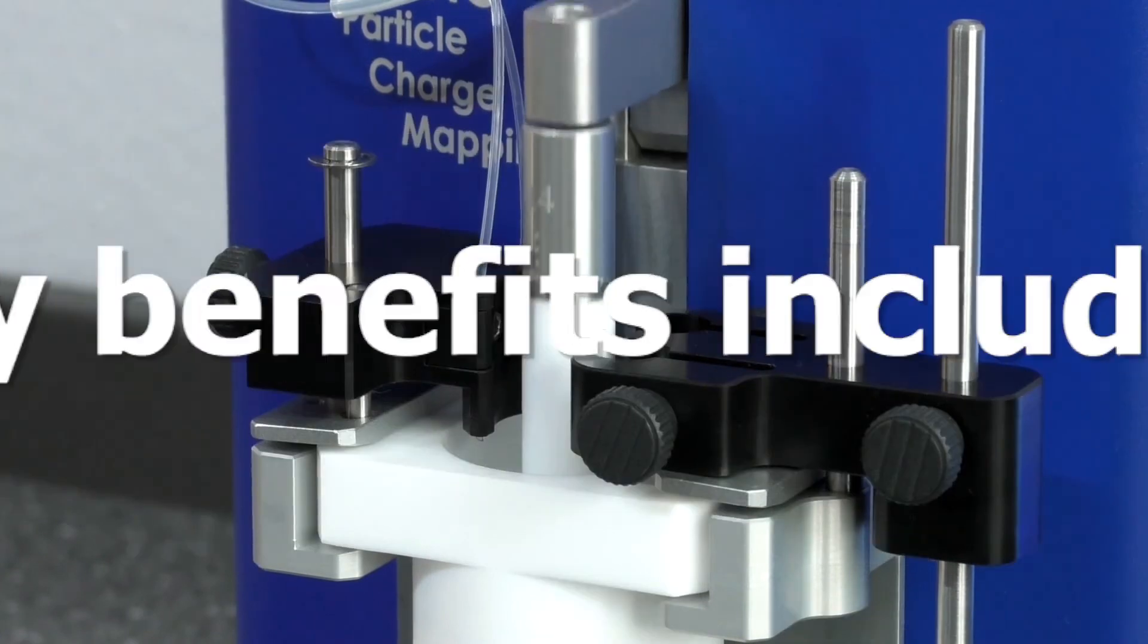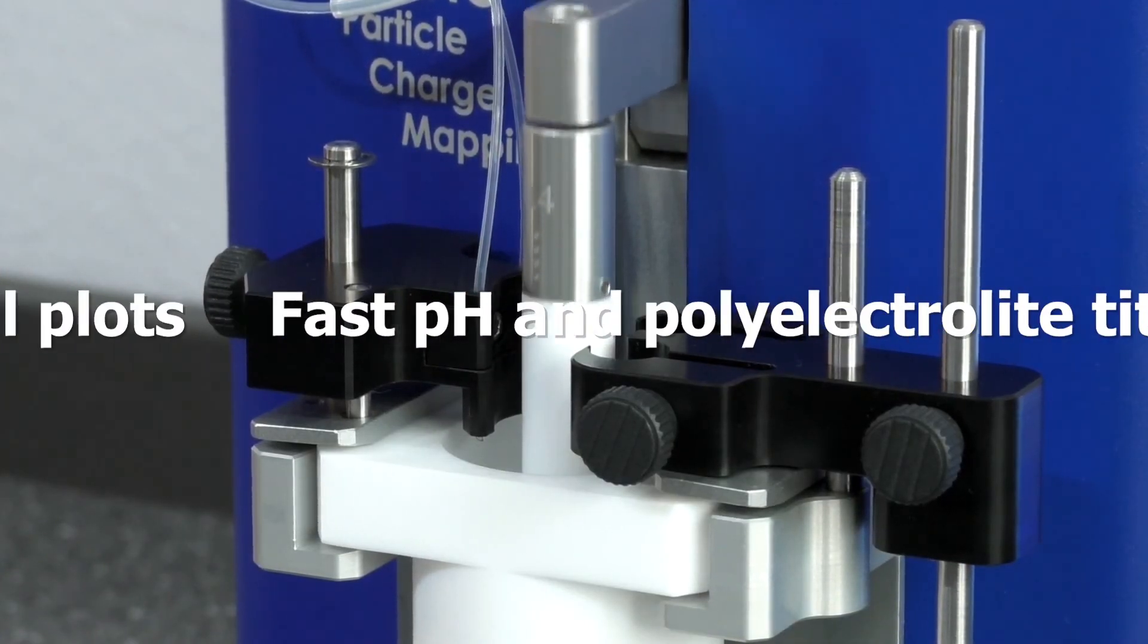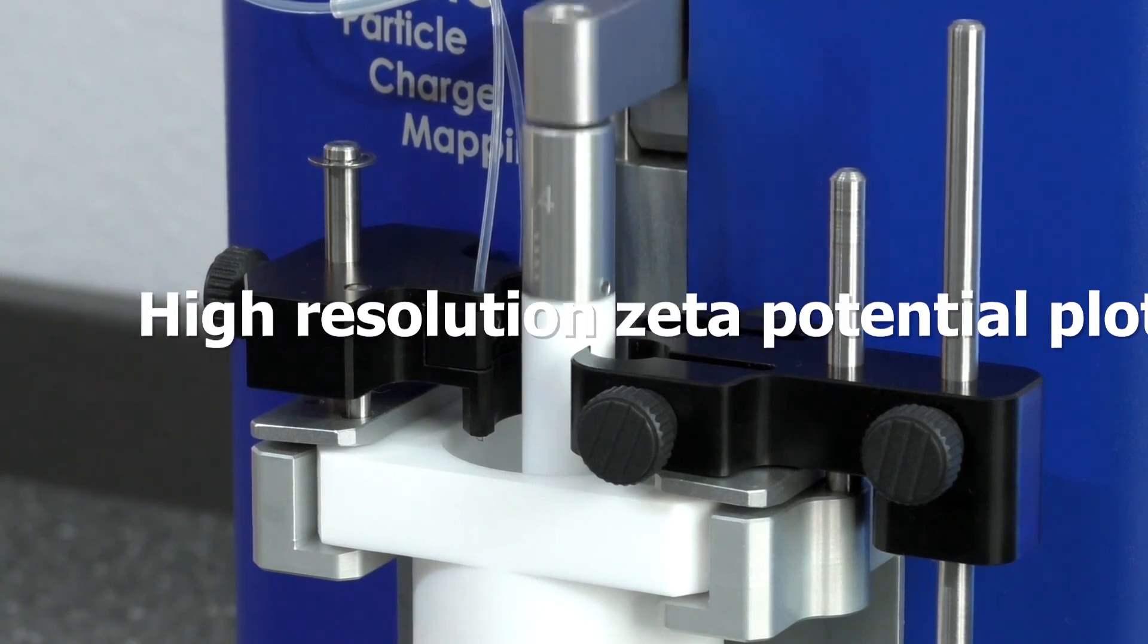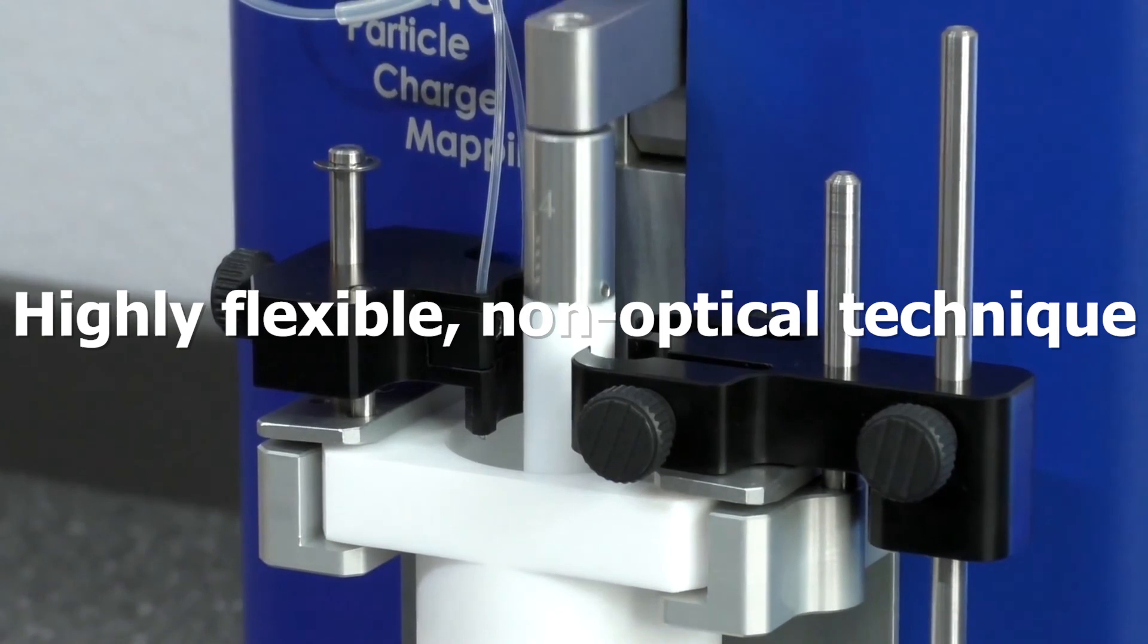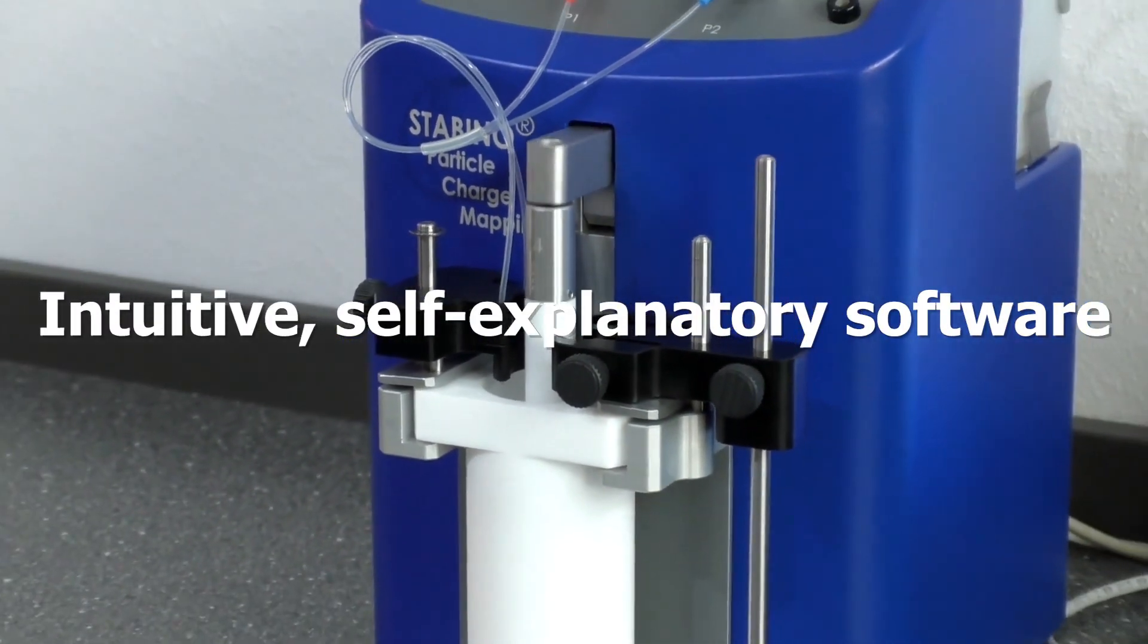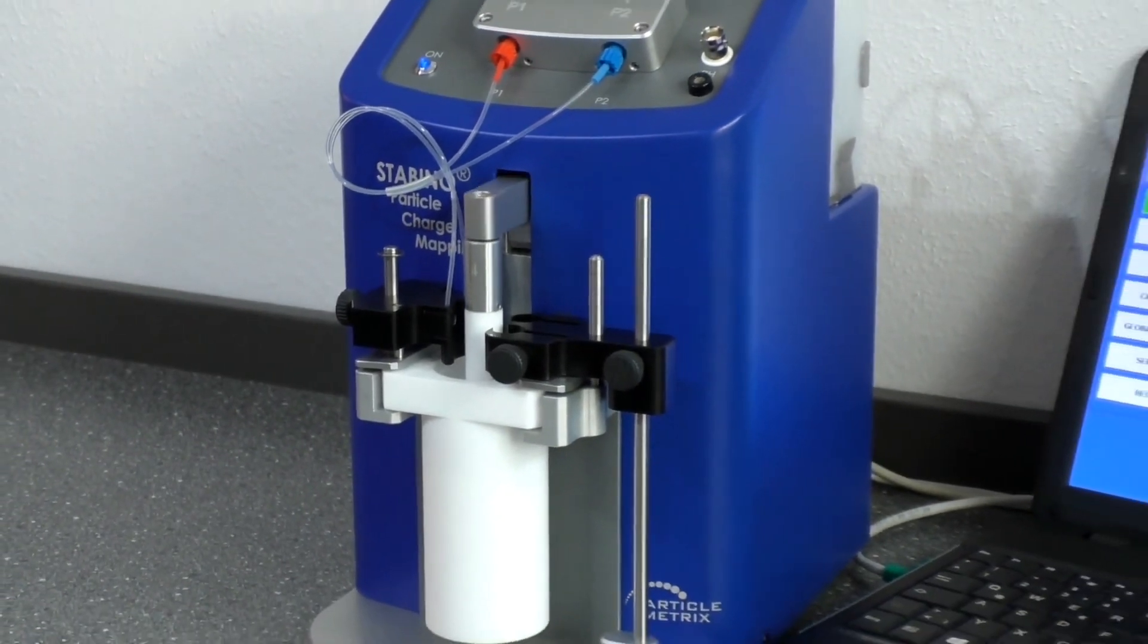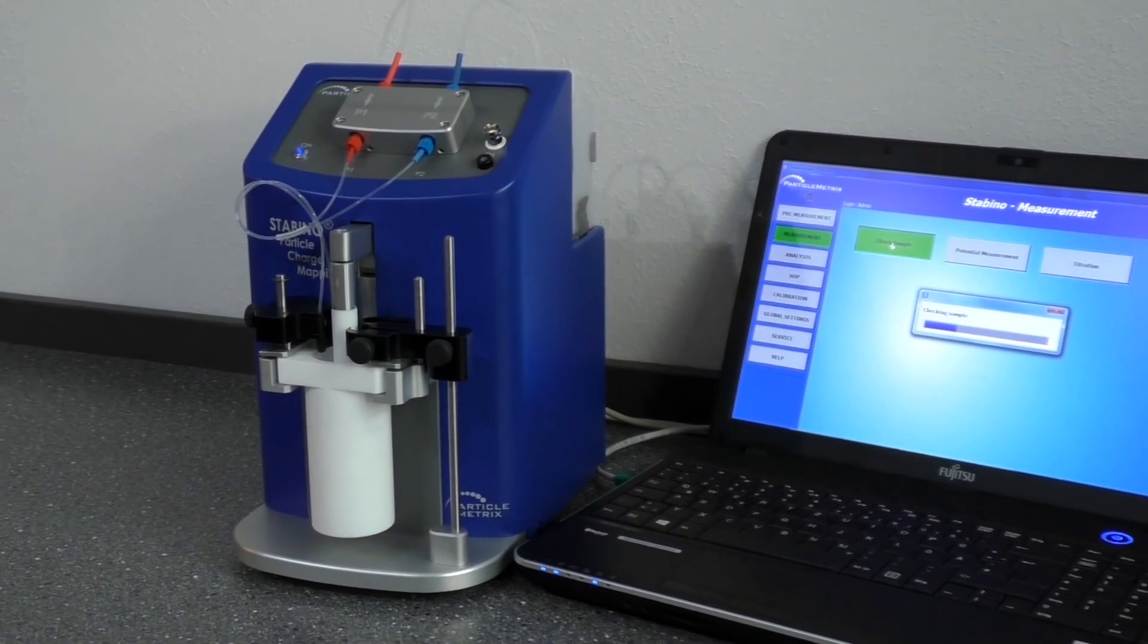The Stabino has a number of key benefits. These include fast pH and polyelectrolyte titration, high-resolution zeta potential plots, the ability to use the mix and measure principle, its highly flexible non-optical technique, and its intuitive, self-explanatory software. The system is ideally suited for formulation development and also has applications in quality control.